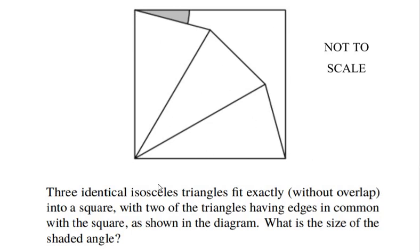Two of the triangles have edges in common with the square. This triangle has one edge in common with the square, and this is the other triangle which has a common edge with the square. Now what is the size of the shaded angle? We need to find out what is the measure of this angle.